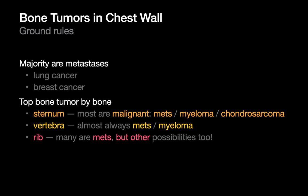Three ground rules for bone tumors in the chest wall: number one, most will be mets, and lung and breast cancer will usually be the most common primaries. Number two, most sternal and vertebral bone tumors are malignant. Number three, rib lesions have a much broader differential diagnosis than other bones in the chest wall.